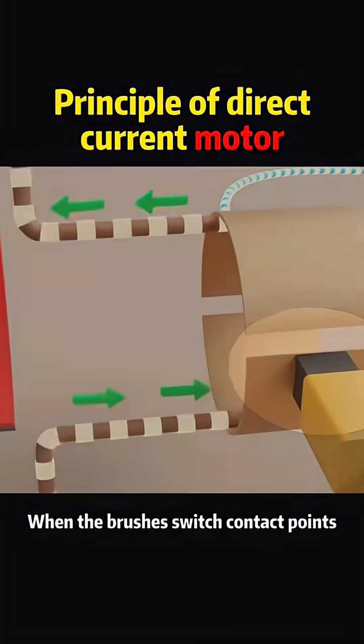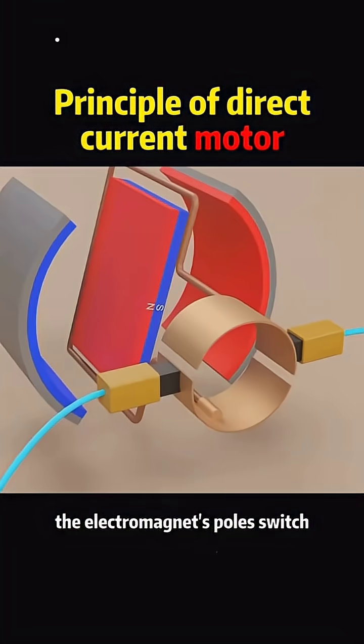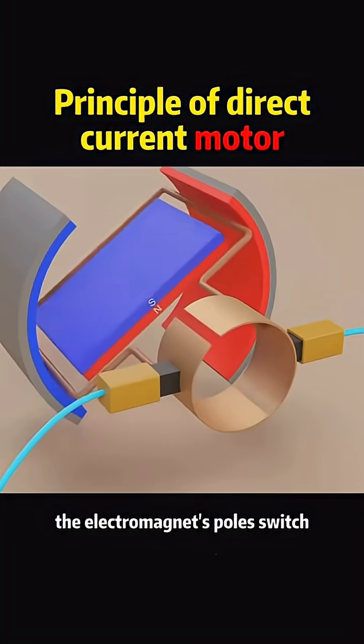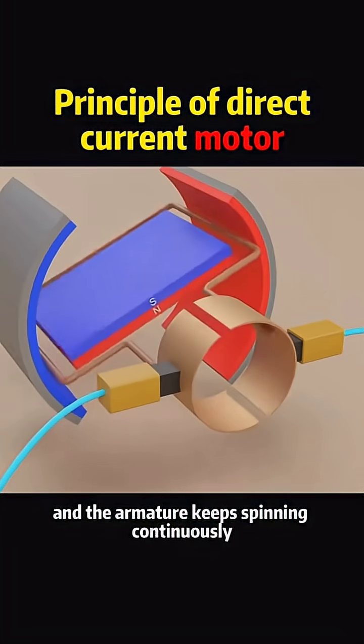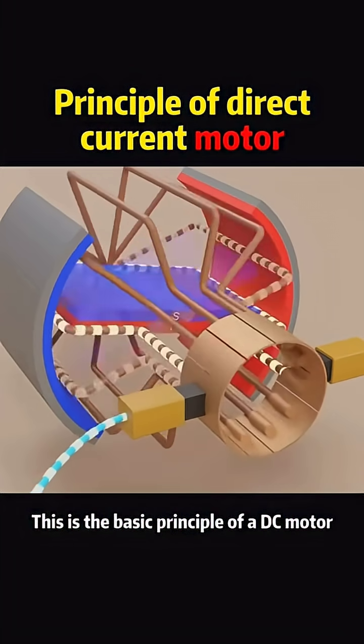When the brushes switch contact points, the current reverses, the electromagnet's poles switch, and the armature keeps spinning continuously. This is the basic principle of a DC motor.